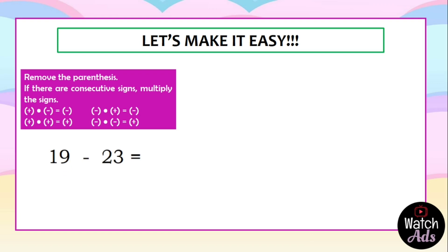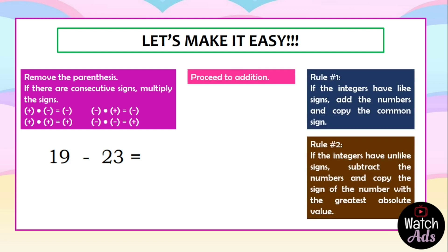Another example: 19 minus 23. There are no parentheses, there are no consecutive signs, so we proceed to addition. That is 19 minus 23 — these are unlike signs. What do we do? We subtract. The answer is 4. Which is greater — 23 or 19? Of course, 23. We follow the sign of 23, which is negative. Final answer: negative 4.